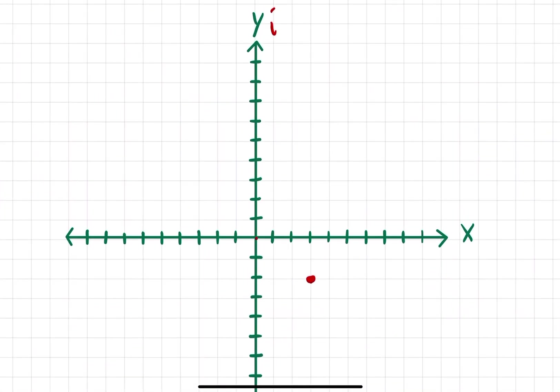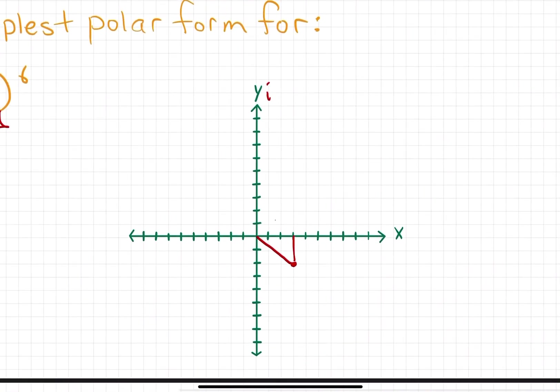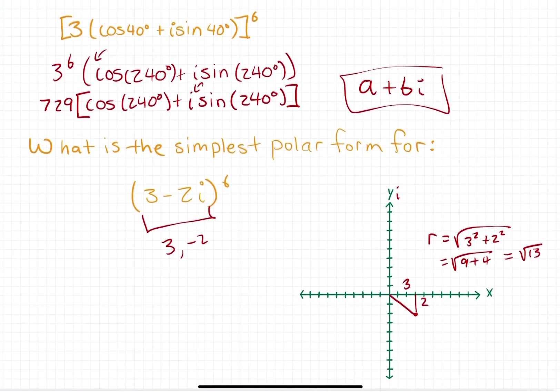The way that we convert this to polar form is we need to get the r, the radius, which is the distance from the origin. Since we have this rectangular graph, it's easy because we just need the distance formula. r equals the square root of 3 squared plus 2 squared, which equals the square root of 13. That's going to be our r.